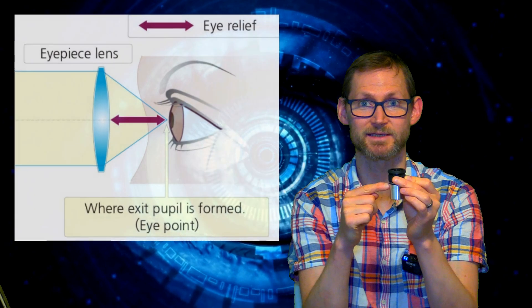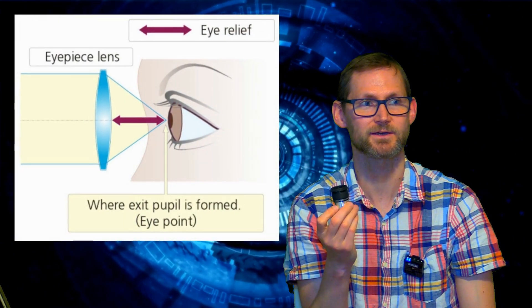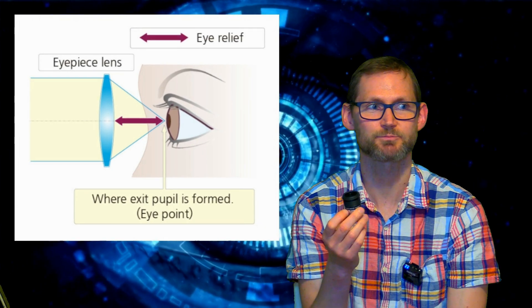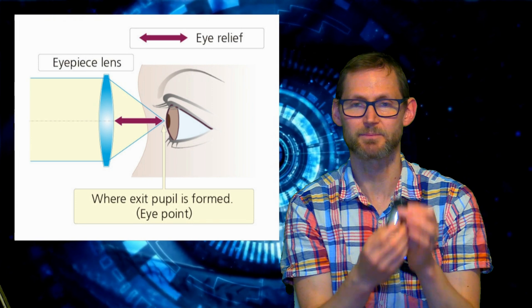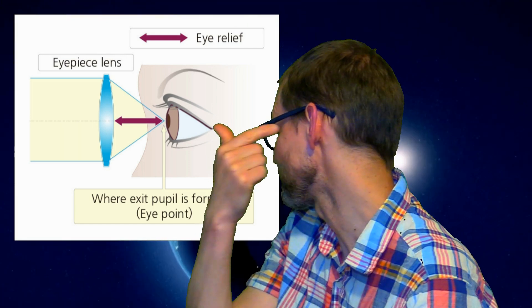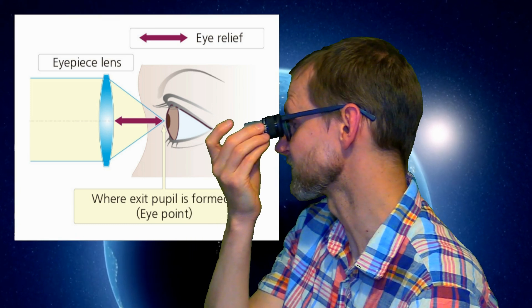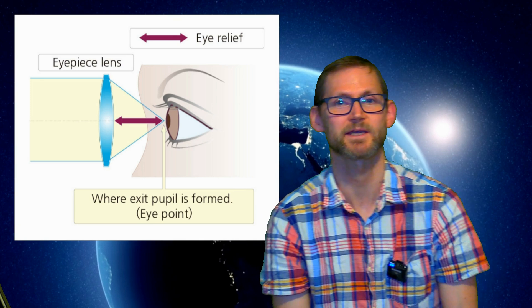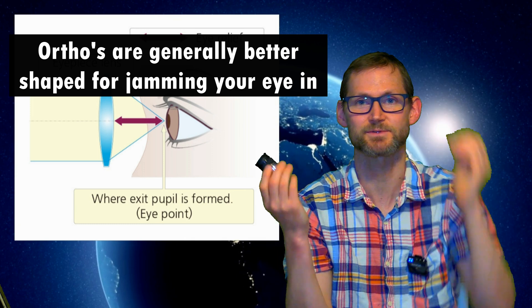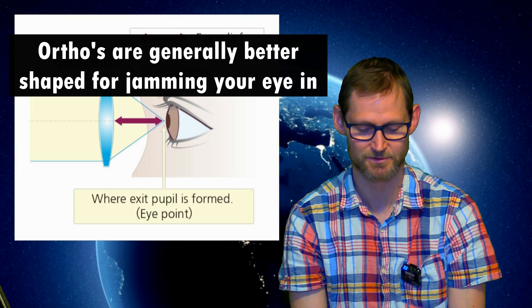The downside is they're not great for planetary because the eye relief, which is the distance from the eye lens to your eye where you can still see the full field of view, scales with focal length. If you've got a 25mm Plössl, your eye relief is probably around 20 millimeters, but if you've got an 8mm Plössl, you're looking at about 5-6mm eye relief, which isn't enough if you're wearing glasses. If you need to wear glasses for astigmatism, it's not really the best thing for planets. But if you can take your glasses off and jam your eye in there, Plössls are okay. I personally can't use them below 10mm though because the eye relief just isn't enough.